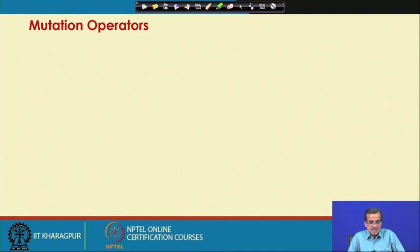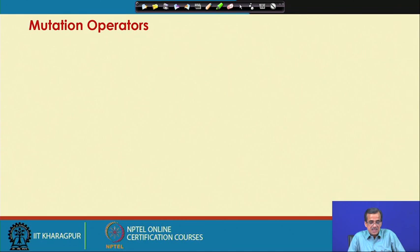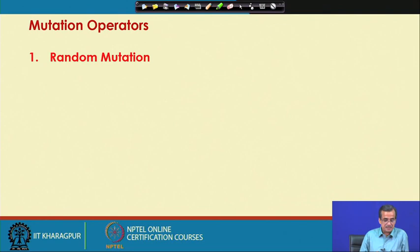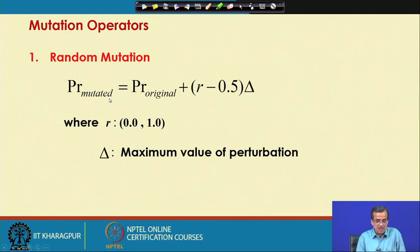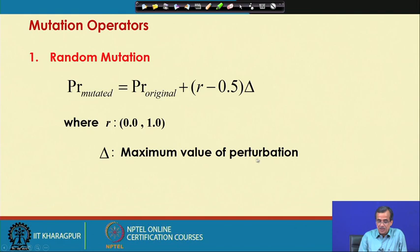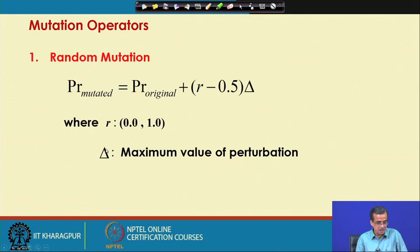Now I will discuss the mutation operators. The concept of random mutation came first. The principle is simple: PR_mutated = PR_original + (r − 0.5) × δ, where r is a random number between 0 and 1, and δ is the maximum value of perturbation — that is, how much dissimilarity you allow in the mutated solution with respect to the original solution, supplied by the user.